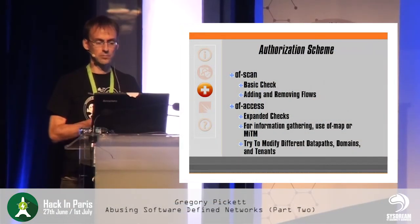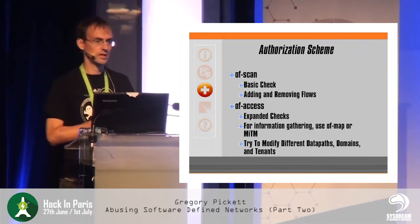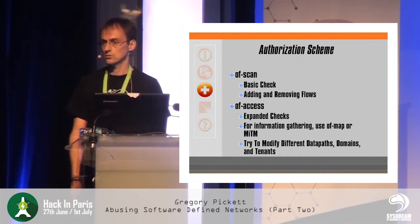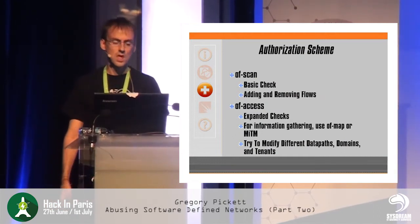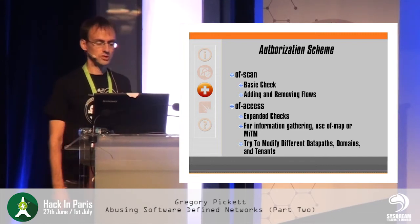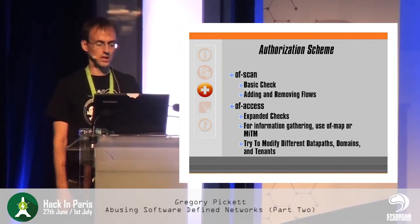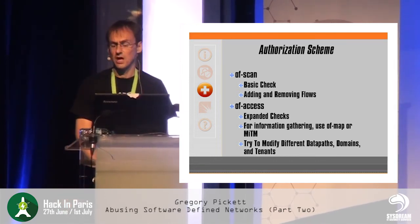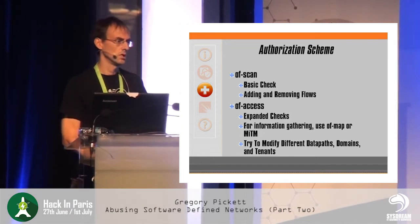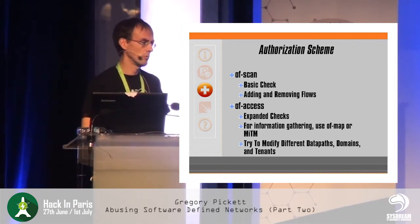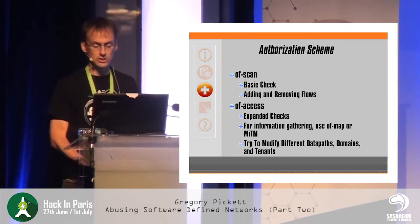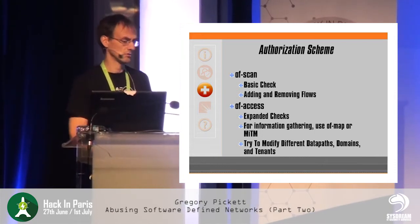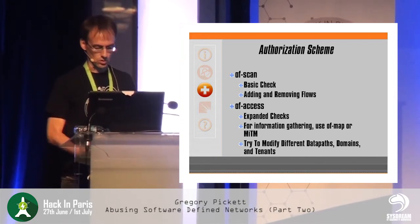Authorization scheme: of_scan does a very basic check because it uses the default domain. All controllers have default domains or some sort of default table, so you can check if you're able to add or move flows using of_scan. For more expanded checks, use of_access — that requires some information gathering either through of_map or man-in-the-middle. See if you can discover other domains and try different data paths, different domains, and different tenants to see if you are authorized to make changes there as well.